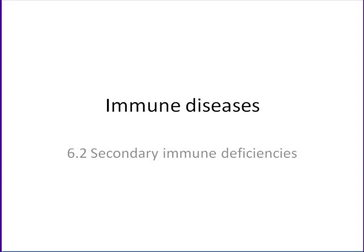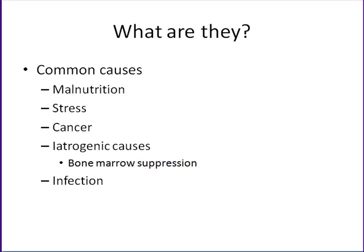The topic of secondary immune deficiencies is an interesting one. This is when I have a deficiency of the immune system that's not caused by some genetic abnormality, defect, or mutation, but rather because of usually some sort of an environmental factor. I'll give you some examples of factors that can cause secondary immune diseases.